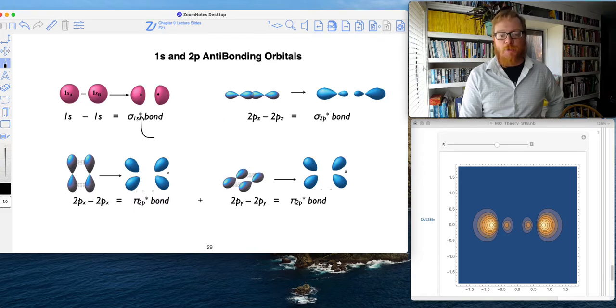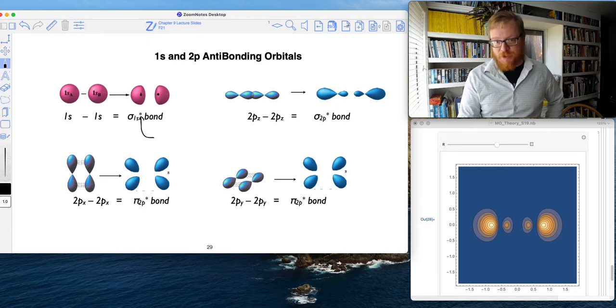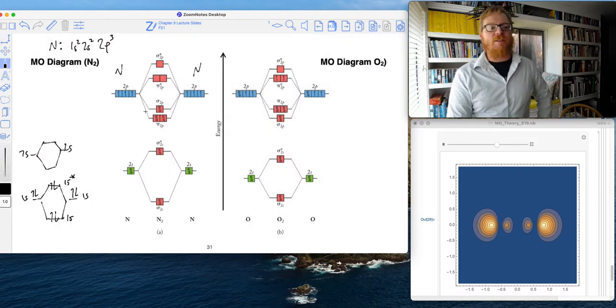Remember, when we added two P's together, we can make a sigma 2P bond, we can make a pi 2P bond, we can actually make two kinds of pi 2P bonds.